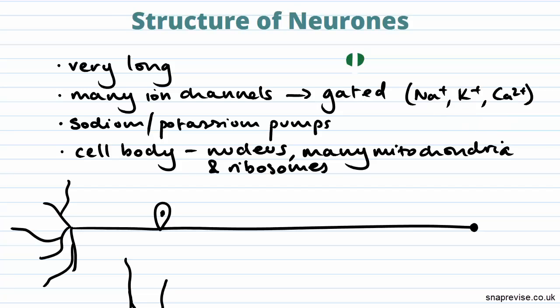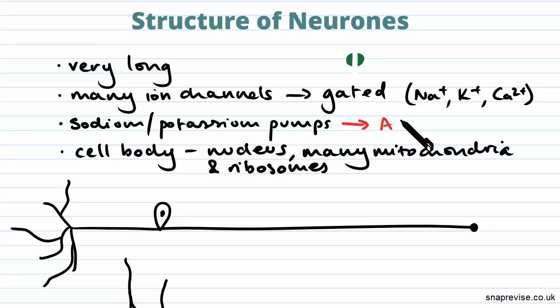Membranes of neurons also contain sodium-potassium pumps, and these are active pumps, so they actually require ATP.